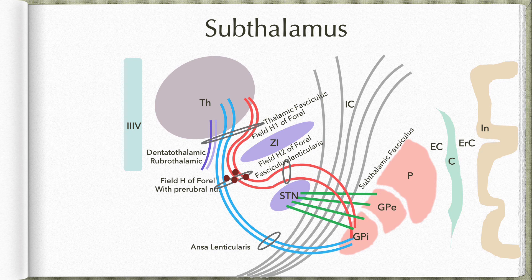In summary, the subthalamus includes different nuclear groups: the subthalamic nucleus, which belongs to the basal nuclei; zona inserta; and the prerubral nuclei. Its fiber bundles include tracts reaching the ventral posterior lateral and ventral posterior medial nuclei, as well as intrinsic fibers connecting the basal nuclei to the thalamus, joined by dentitothalamic and rubrothalamic fibers.